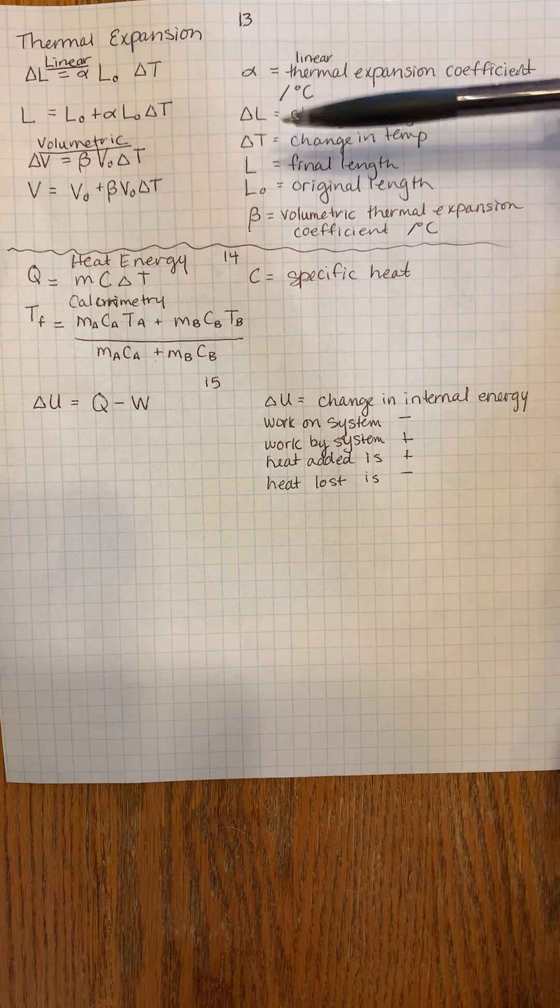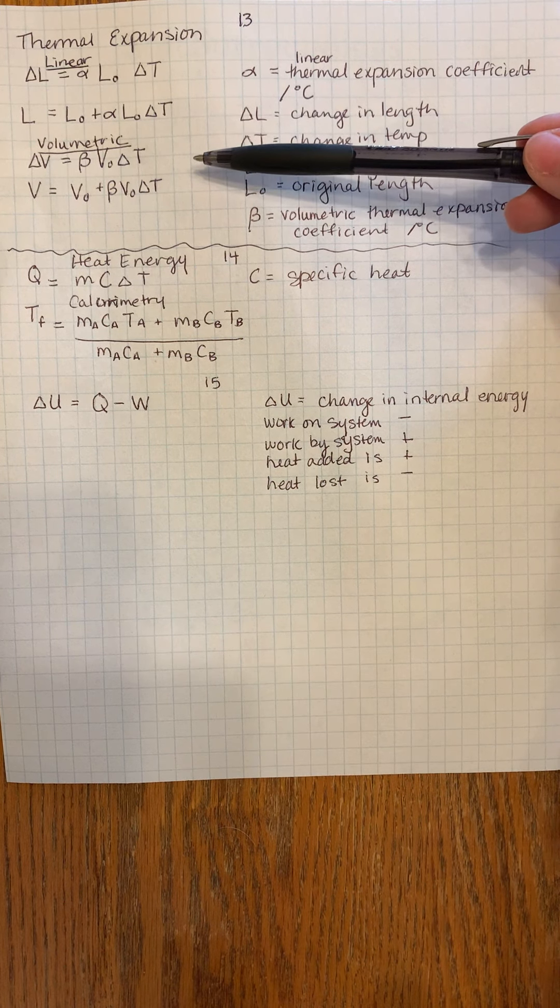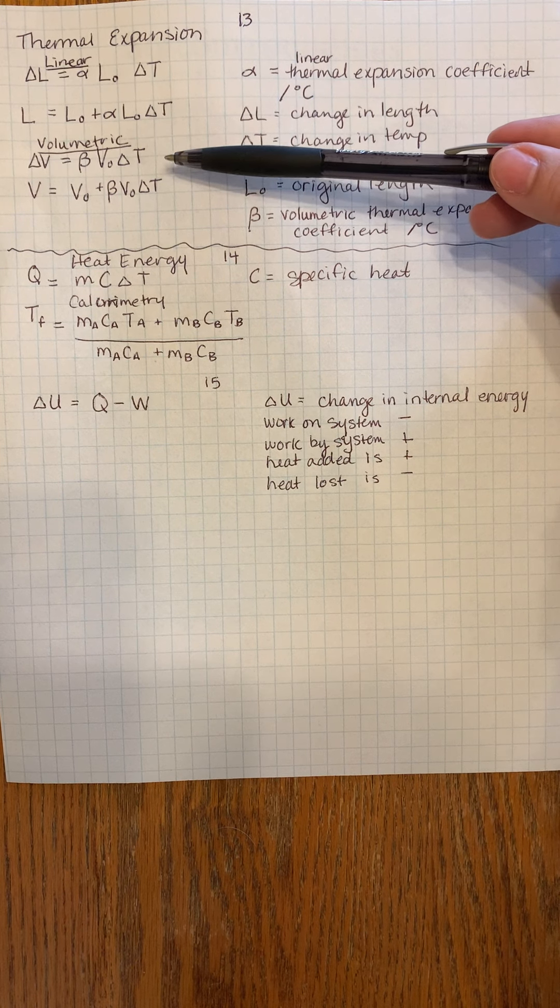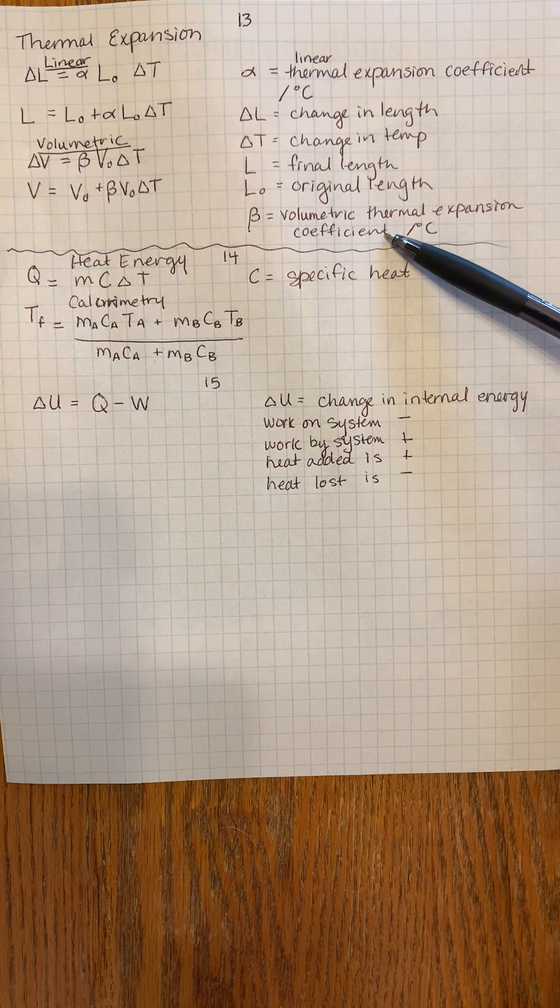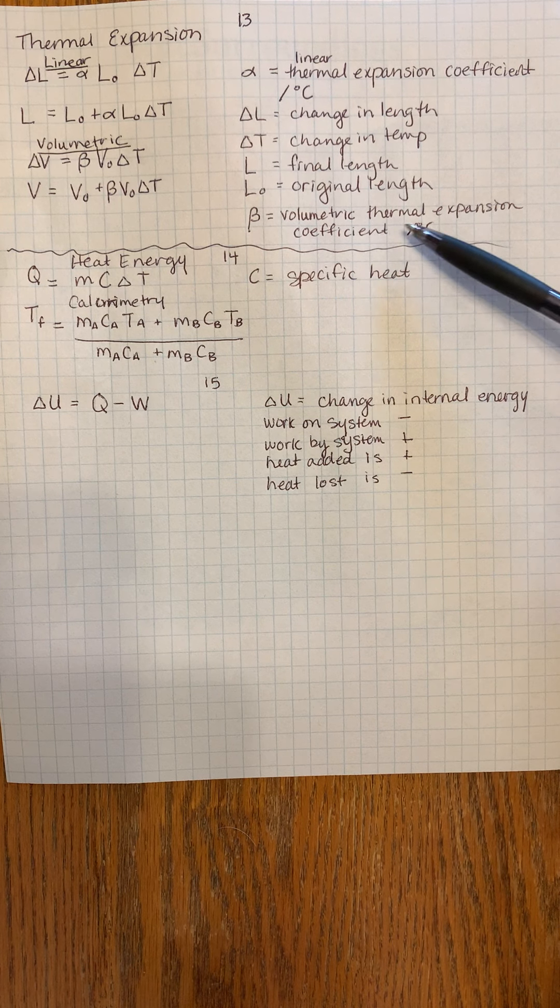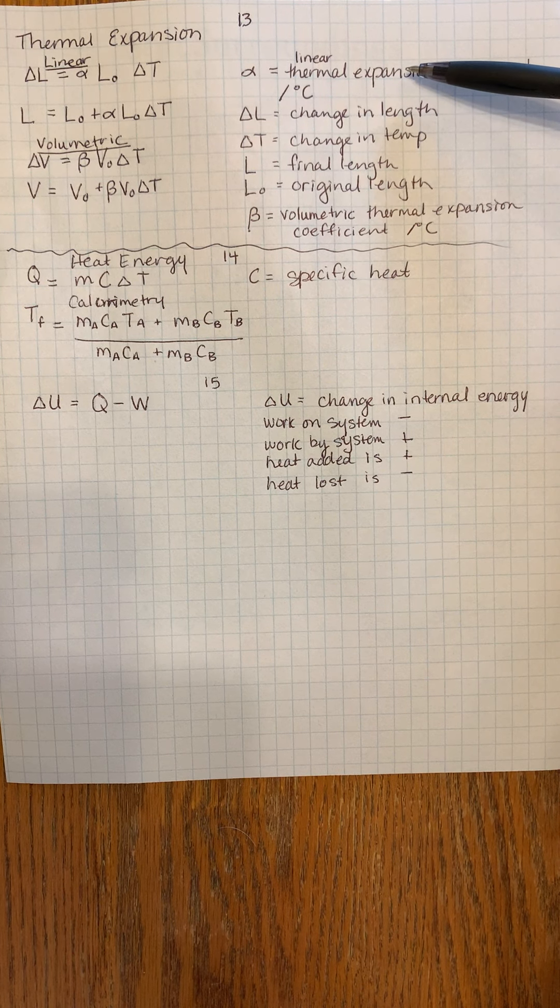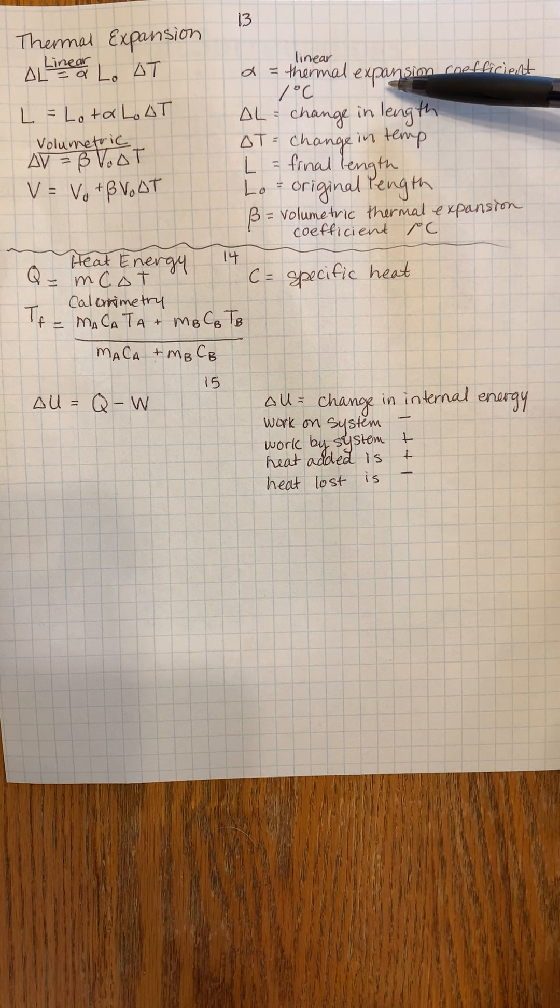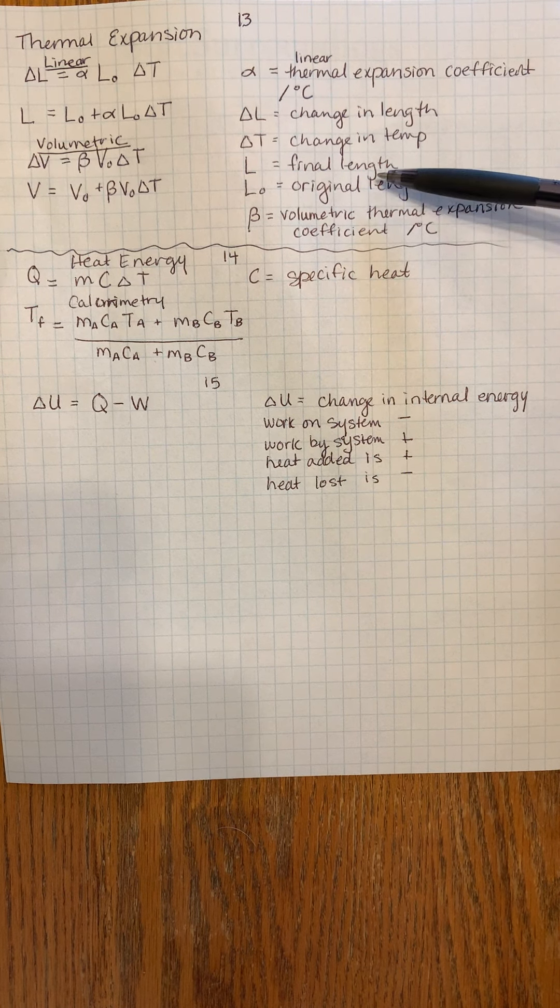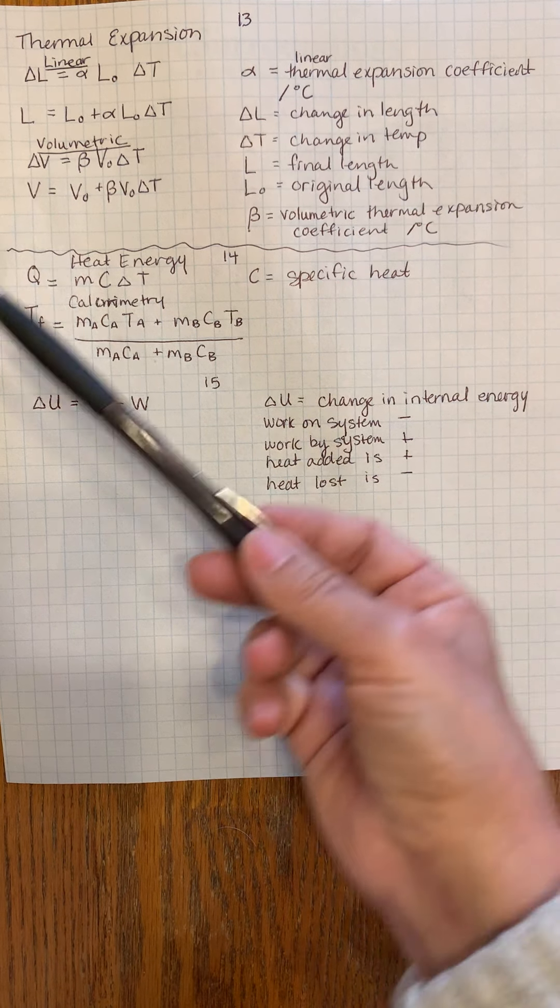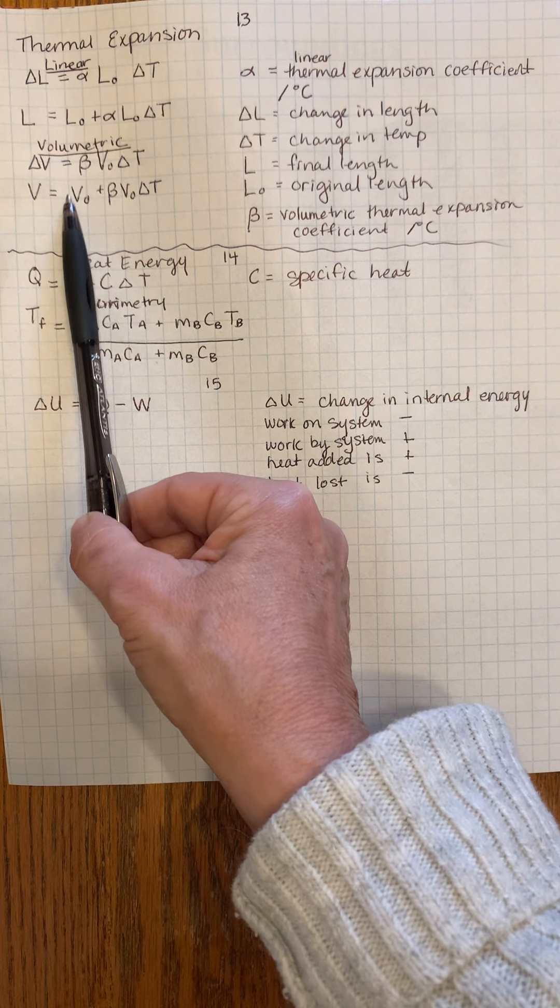We have the same very similar type of structure for volume - volumetric expansion, gases in particular. The change in volume ΔV equals beta times V₀ times ΔT. Beta corresponds with three-dimensional volumetric thermal expansion coefficient. If you know alpha, beta is typically alpha tripled because it's three dimensions. This would be the change in volume, the final volume, and the original volume.